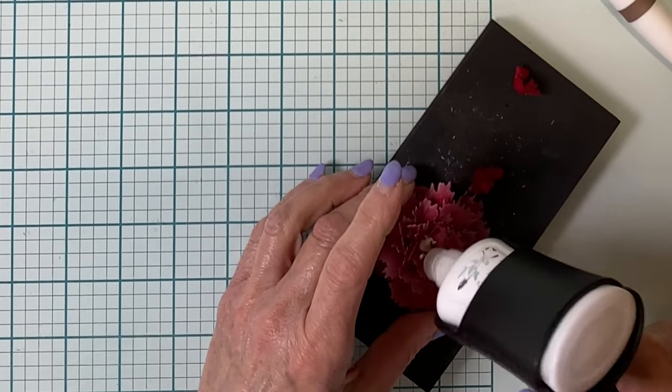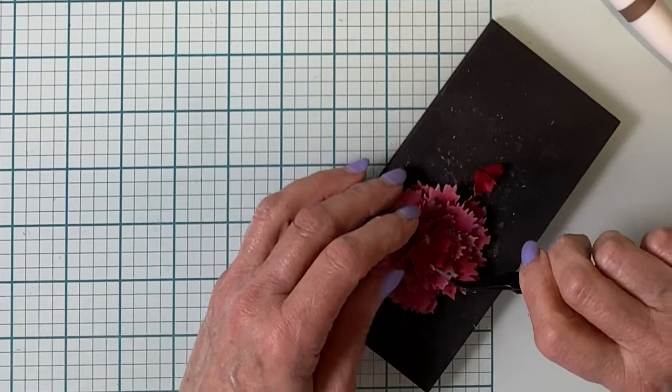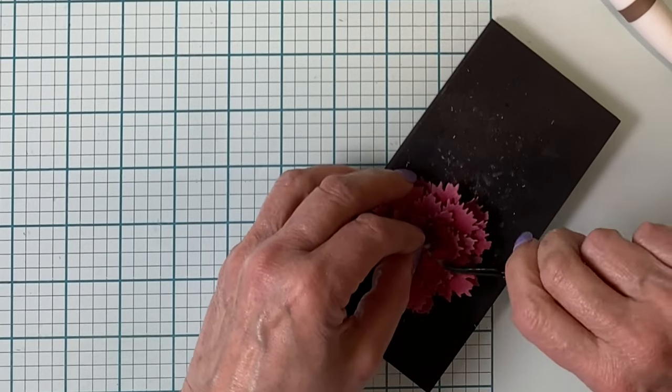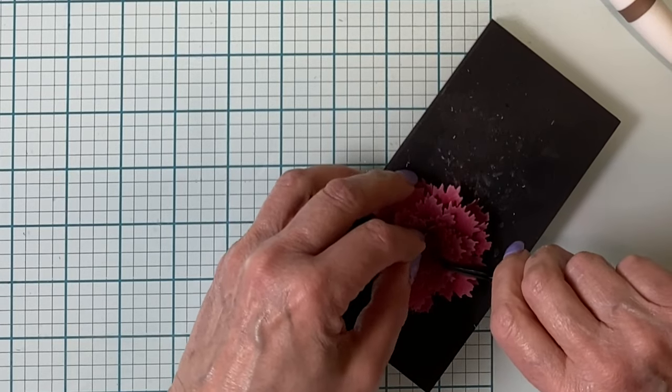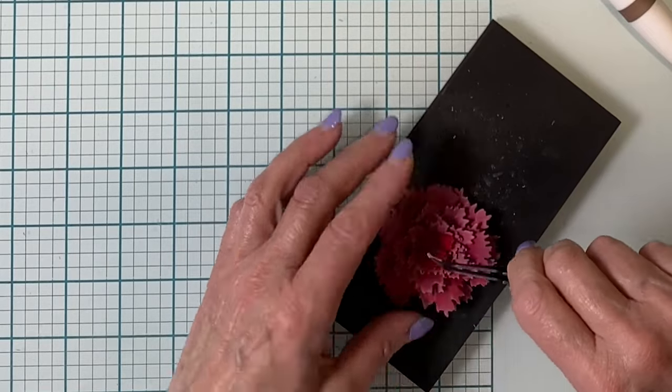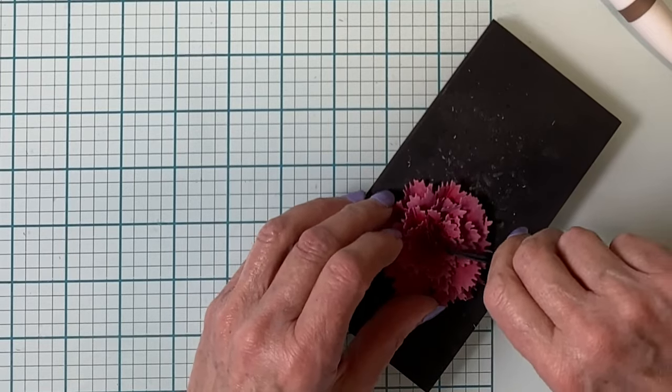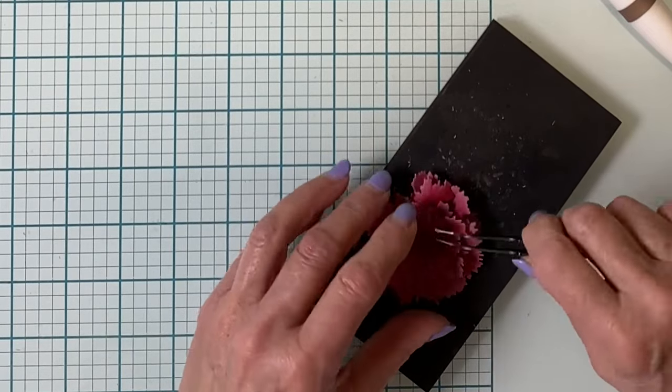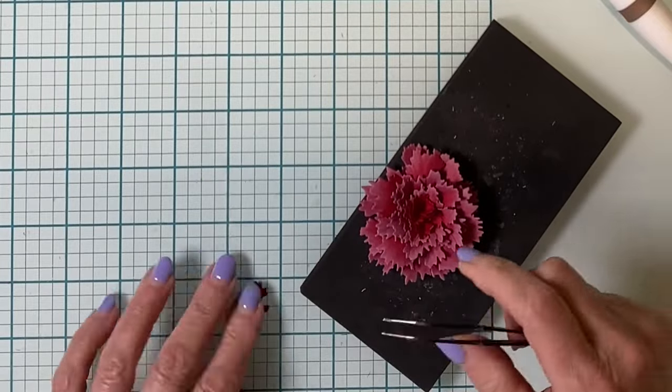These petal layers are going to be placed side by side in the center of the carnation. That will create a ruffled look in the middle of the flower. And I'll just use the tips of the tweezers to hold them in place until that adhesive sets up, which does not take very long.